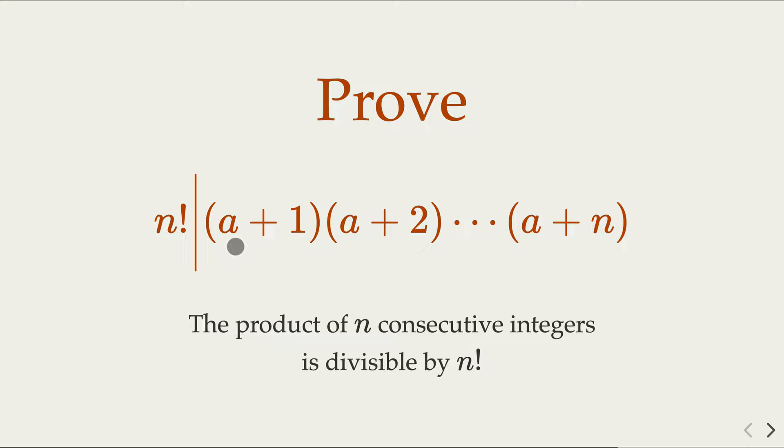Now here, I have numbers from a plus 1, a plus 2, up to a plus n. The product of those numbers is a multiple of n factorial. So that is a number theory fact that we proved in earlier videos, and that is based on what is called the periodic numbers.